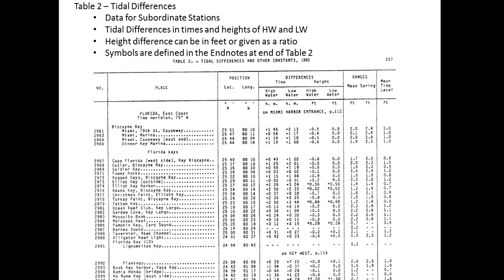Now we've gone to page 227 in the book — we're at table two. Table two is the data for the subordinate stations: the tidal differences table, or tidal differences and other constants. This is where we start to get into the nitty gritty for various places up and down the coast.